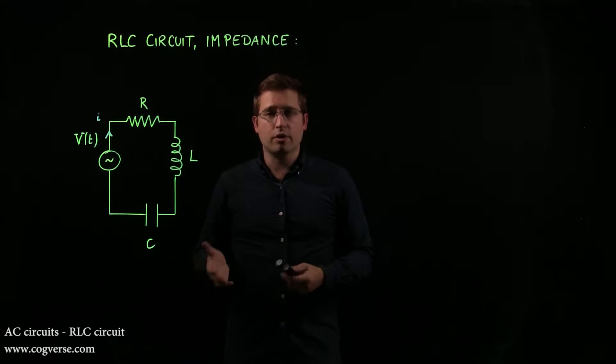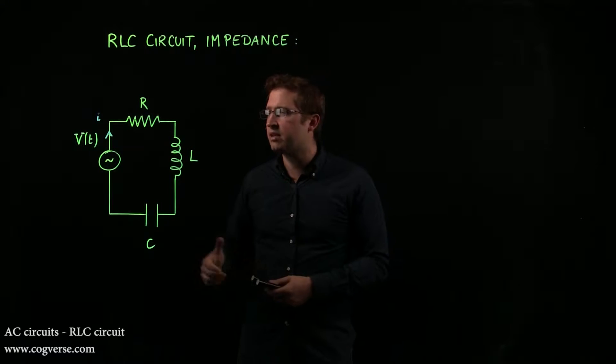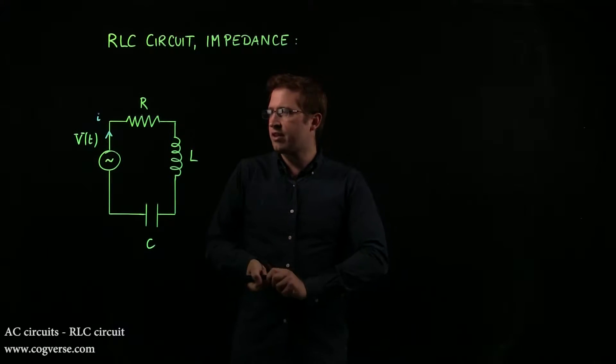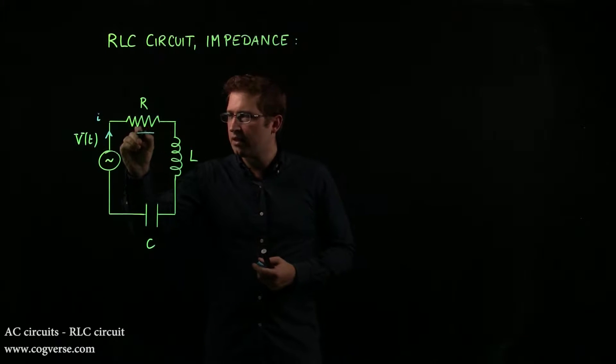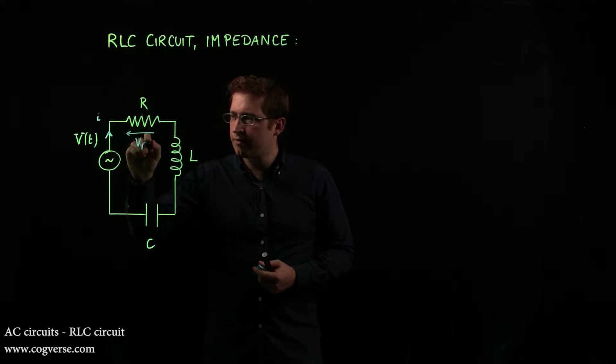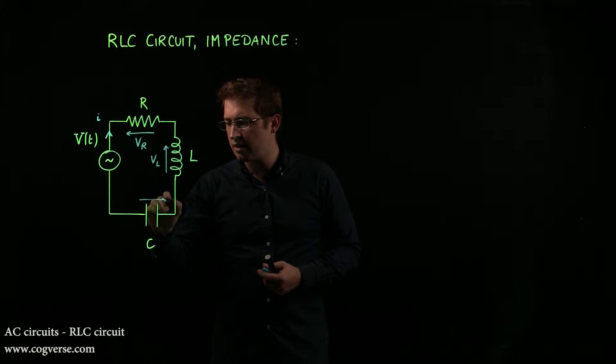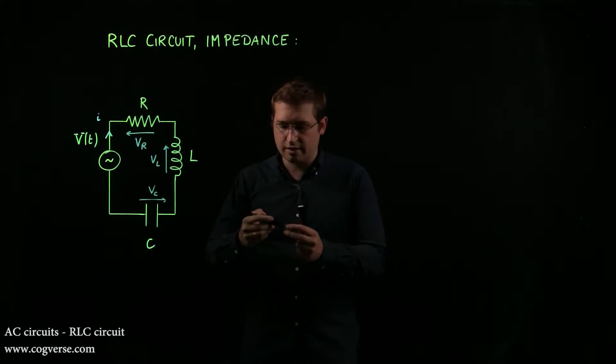Now, of course, if it's an AC generator, the current varies all the time, but let's assume that we draw it in this direction just for the sake of drawing a current. In that case, we have Vr like this, Vl like this, and Vc like this.